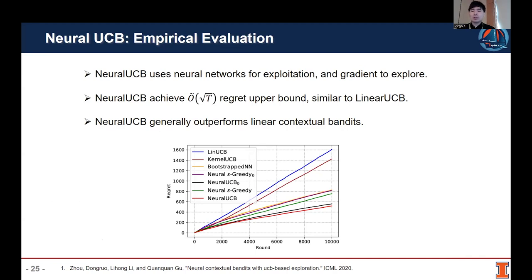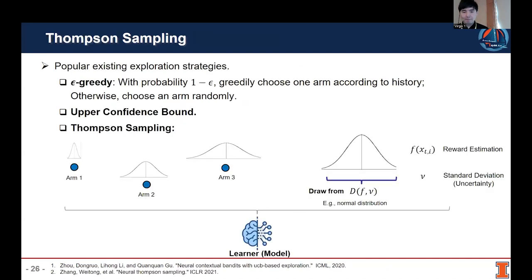Neural UCB can achieve a sub-linear regret upper bound similar to Linear UCB. In the end, Neural UCB generally outperforms linear contextual bandits because in the real world the reward function may be very complicated, and the linear reward assumption may not be satisfied. Therefore, neural contextual bandits usually outperform linear contextual bandits because they can learn more general reward functions. Now let's review the third exploration strategy: Thompson Sampling. In this strategy, each arm is formulated as a distribution where the mean is the estimated reward and the variance measures the uncertainty of this decision. For each arm, we draw a sample reward from each distribution and select the arm with the maximum sampled reward.